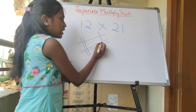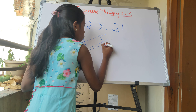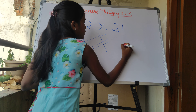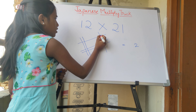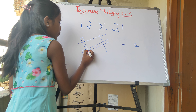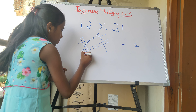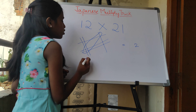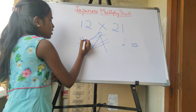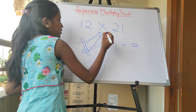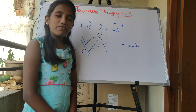Now we have to check the sitting points and mark as our answer. So here: 1 and 2, so 2. Next, so here: 1, 2, 3, 4, 5 — so 5, answer is 5. Next, here: 1, 2 — so 2. Our answer is 252.